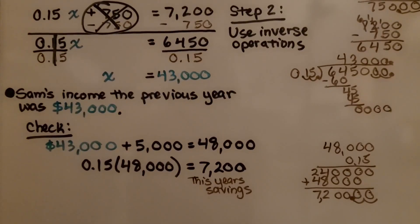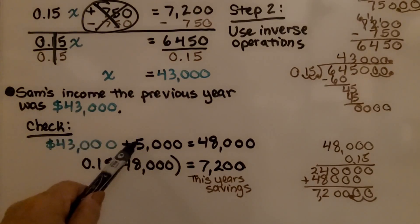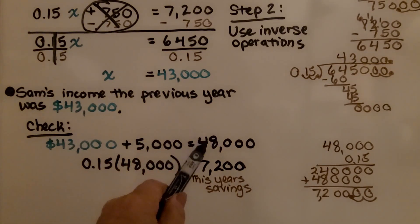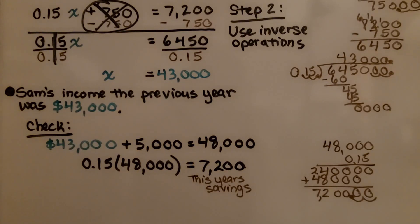Now we can check this to make sure it's accurate. His previous year's income was 43,000. He made 5,000 more this year, that means this year he's making 48,000. We know he's saving 15% a year, and we know that this year he made 7,200 in savings. When we multiply 0.15 times 48,000, it does equal 7,200. So all the numbers fit perfectly together. We know we did it correctly.